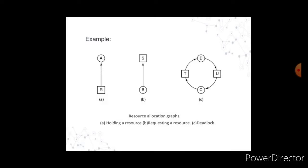For example, in the resource allocation graph: resource T is assigned to process D and resource U is assigned to process C. Process D is requesting or waiting for resource U, and process C is requesting or waiting for resource T. Process C and D are in deadlock over resources T and U.